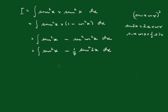All right, now we know that cos of 2x equals 1 minus 2 sine squared x, which means sine squared x equals...